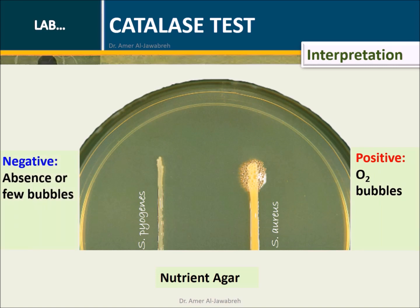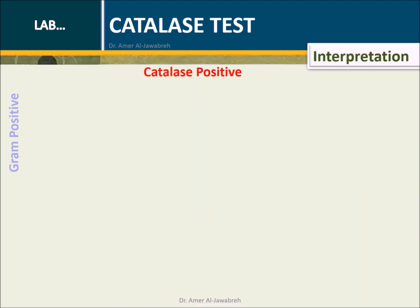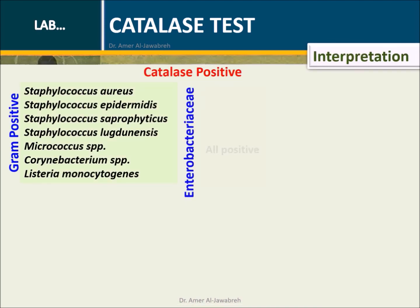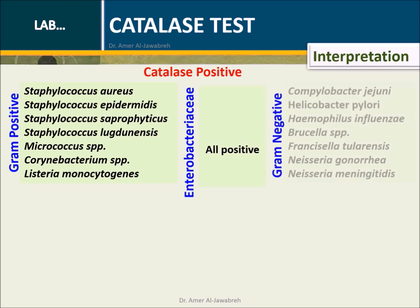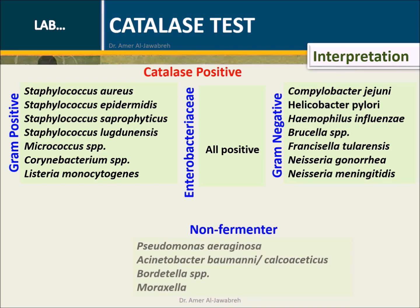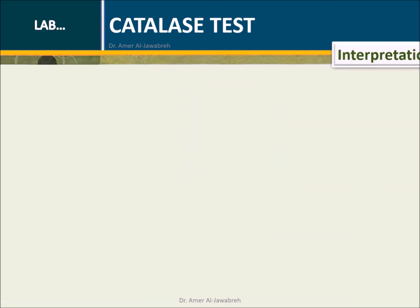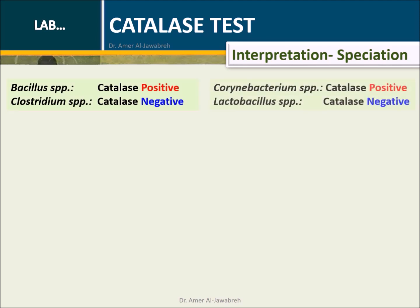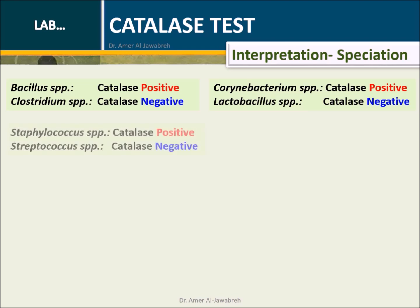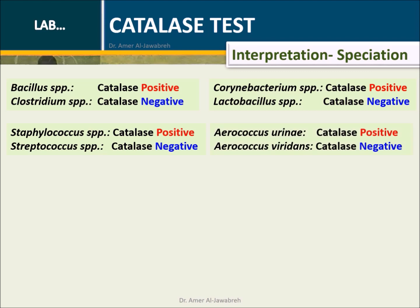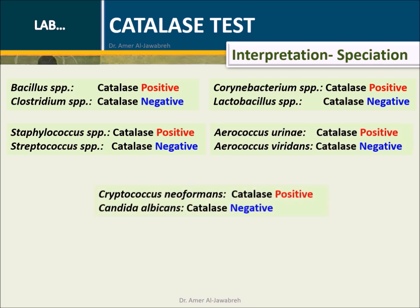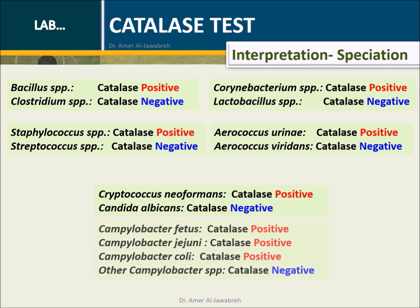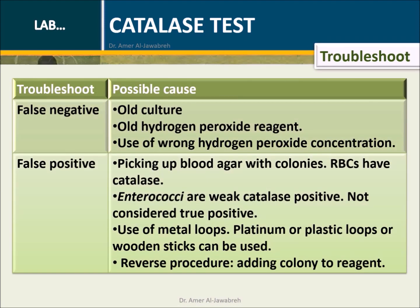Interpretation: Oxygen bubbles indicate positive results; absence or few bubbles indicates negative results. Results apply to Gram-positive and Gram-negative Enterobacteriaceae, non-fermenters, and speciation between Bacillus and Clostridium species, Chromobacterium and Lactobacillus species, Staphylococcus and Streptococcus species, Aerococcus species, Cryptococcus neoformans and Candida albicans, and Campylobacter species.